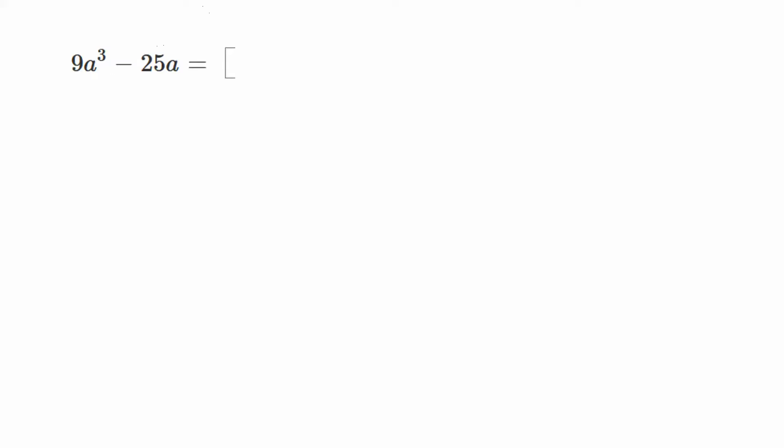9 and 25 don't have anything in common. So at this point, I'm going to take out an a out of both those terms. It gives us a times 9a squared minus 25. Then I ask myself, does this factor down some more? Yes, that is a perfect square of 3a. That is a perfect square of 5. So a on the outside, 3a plus 5, and 3a minus 5. That should be the input there.